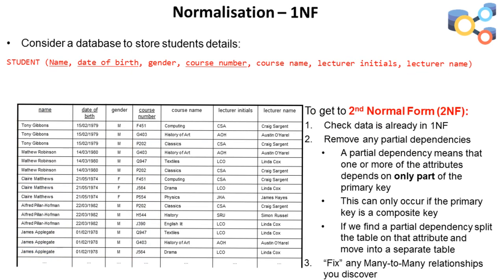To get this table into 2nd normal form, we must: first, check the data is already in 1st normal form; and second, remove any partial dependencies. A partial dependency means that one or more attributes depends on only part of the primary key — and this can only happen, obviously, if your primary key is a composite, which for us it is. If we find a partial dependency, we should split the table on that attribute and move it into a separate table. We should also, at this point, fix any many-to-many relationships we discover.